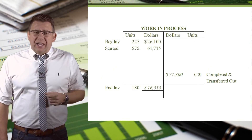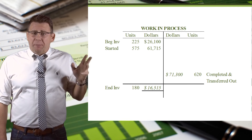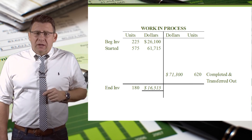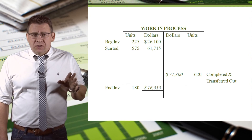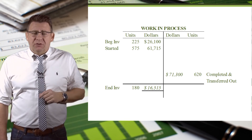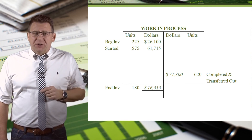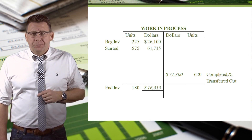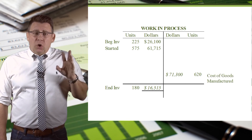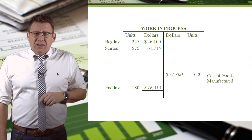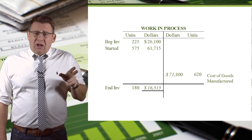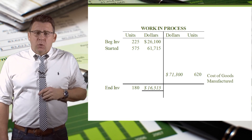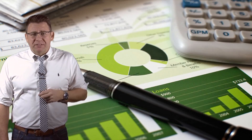One final look at the WIP T-account with these numbers included. This T-account balances because the $87,815 of production costs that need to be accounted for can be: $71,300 was transferred out to the next process with the completed units, and $16,515 remains in WIP with the partially completed units as ending inventory. If this happened to be our only process or our last process, then the completed and transferred out would be called cost of goods manufactured and transferred to finished goods inventory rather than the next work in process account. And that concludes the five steps of process costing.